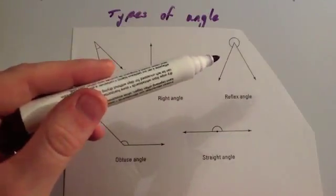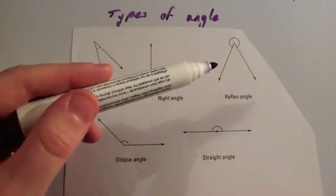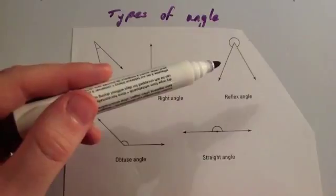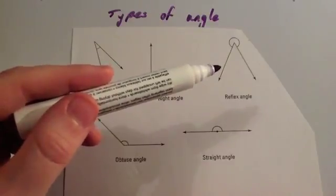And any angle that's bigger than a straight line — bigger than 180 but less than 360 — is called a reflex angle.